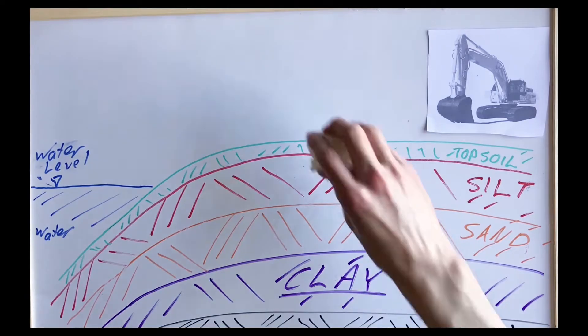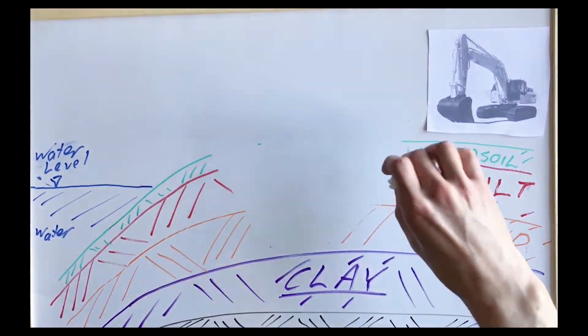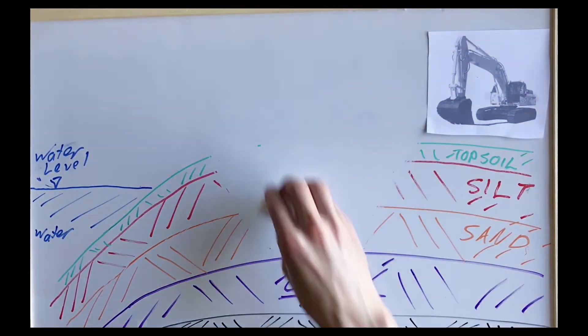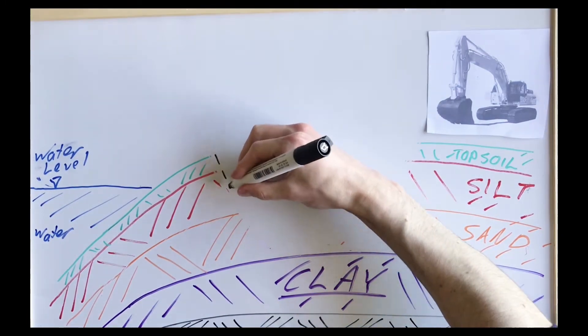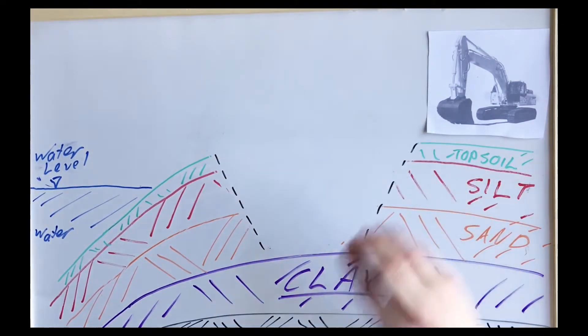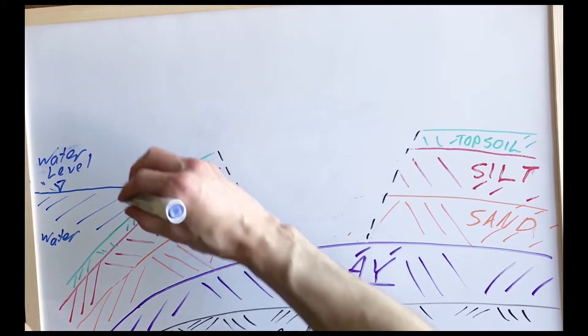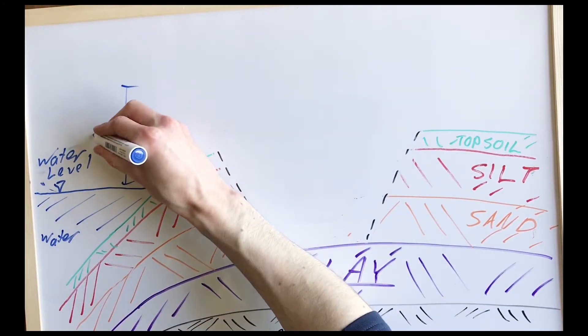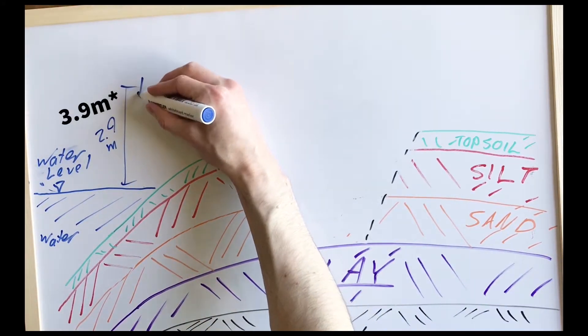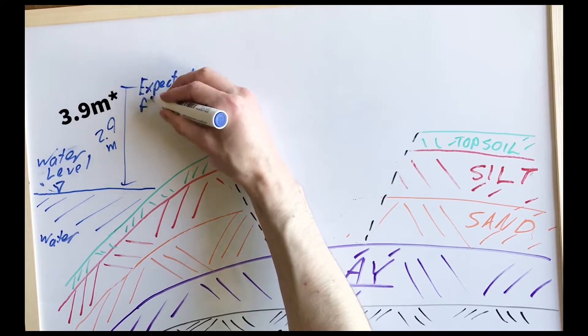Once we find our ideal build site, we can begin excavation of our topsoil and subsequent layers till the impermeable layer can be reached. This is similar to our borrow site material. From our site investigation, we know that the maximum expected flood level is 3.9m above the usual water level.